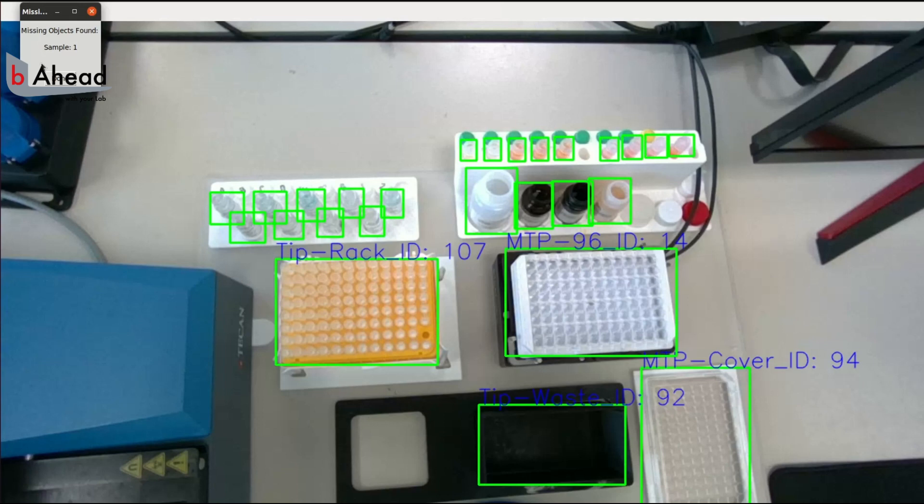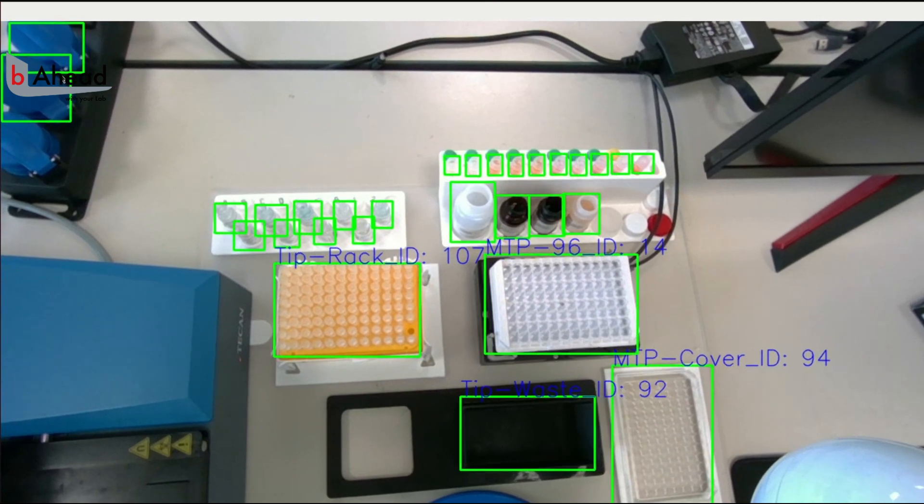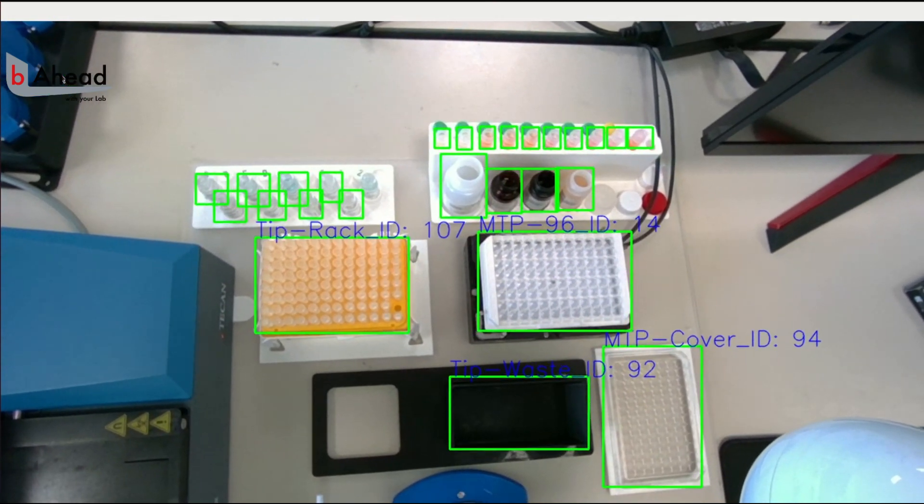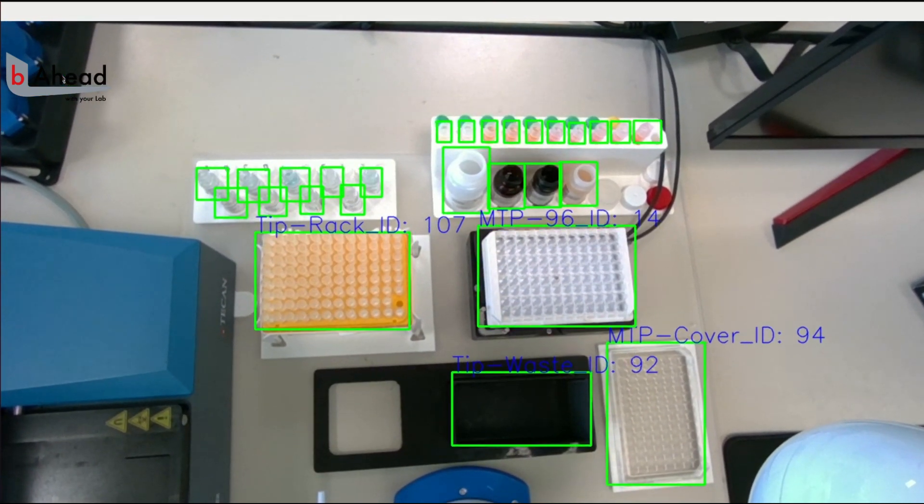First, a customized faster RCNN object detection algorithm that was trained on hundreds of images is used to identify possible objects and their respective locations.